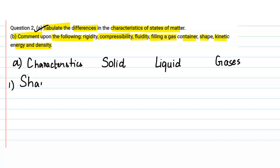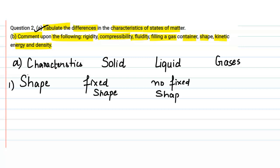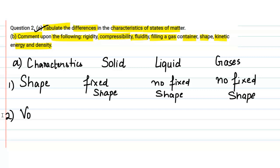The first characteristic is shape. On the basis of shape, we know that solids have a fixed shape. Liquids do not have a fixed shape, and gases also do not have a fixed shape.